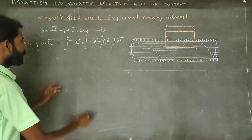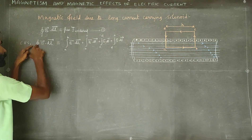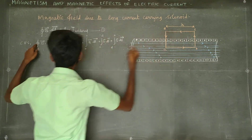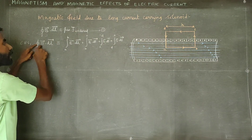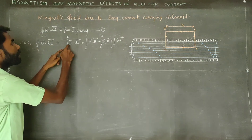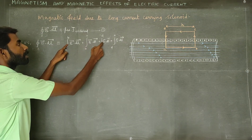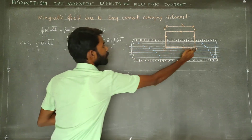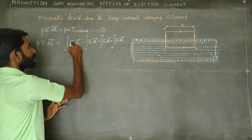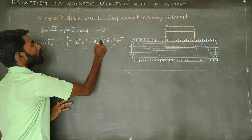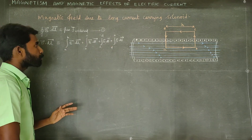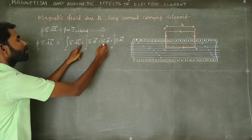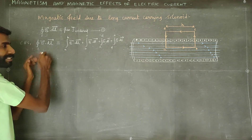Further mathematical simplification: the closed integral over the entire Amperian loop is broken into a line integral. This closed integral is a line integral summed over the entire closed loop. We can add each segment line integral together automatically to form the closed loop integral.